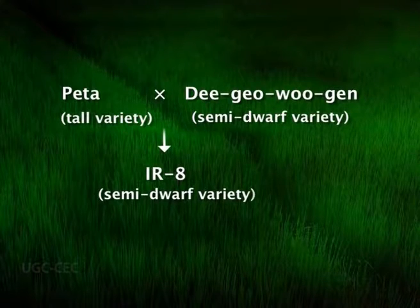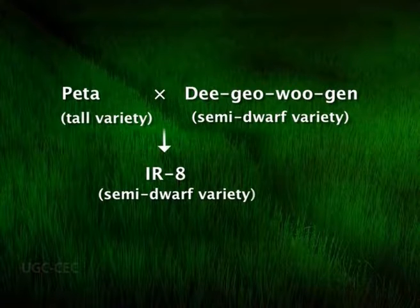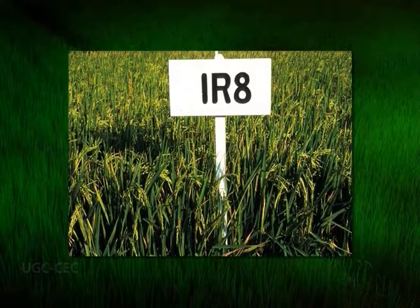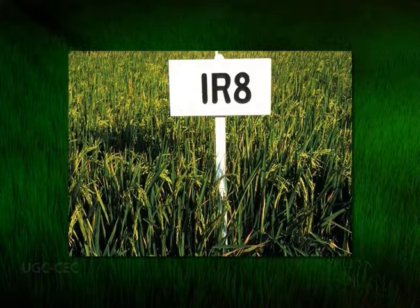The famous semi-dwarf variety IR8 was obtained as a result of a cross between the tall tropical variety Peta and the sub-tropical semi-dwarf Dee-geo-woo-gen. This variety has several desirable characteristics: it is 100 cm tall, erect, profusely tillering and early maturing. It has stiff culms, dark green leaves, a high ratio of grain to straw, high response to nitrogen and no response to photoperiod.